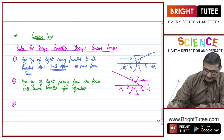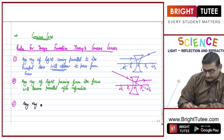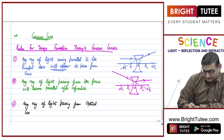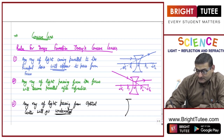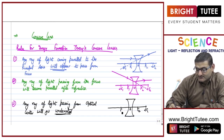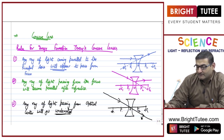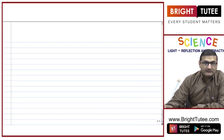The third rule states that any ray of light passing through the optical center will go undeviated — it will go straight without bending, the same as with convex lenses. For the concave lens with f2, twice f2, f1, and twice f1 labeled, if a ray of light passes through the optical center it goes straight without any deviation or bending from its path.